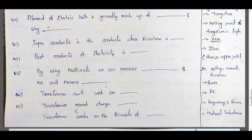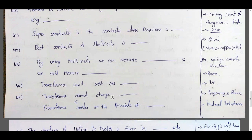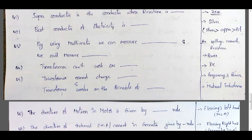Transformer cannot work on DC — it works only on AC. Transformer cannot change frequency or power; it changes only voltage or current. The transformer changes voltage without changing frequency, which remains 50 hertz in India. Transformer works on the principle of mutual inductance.